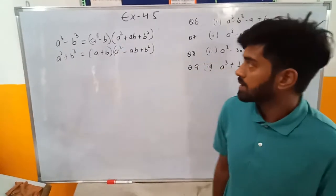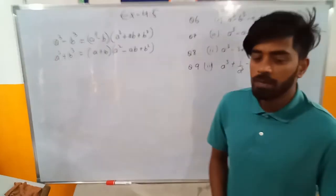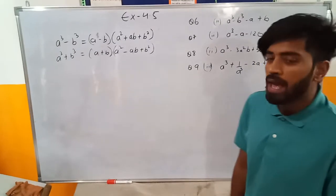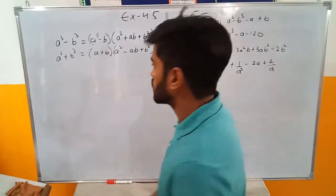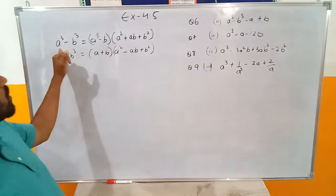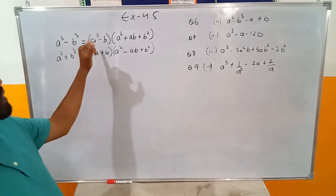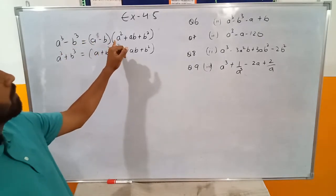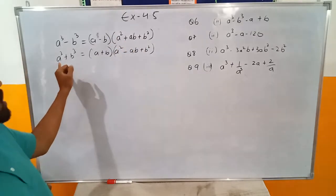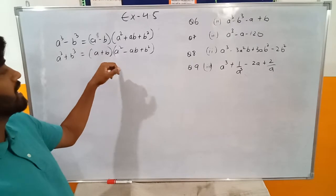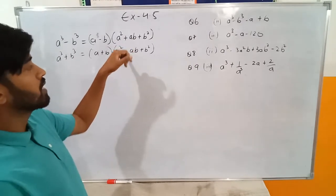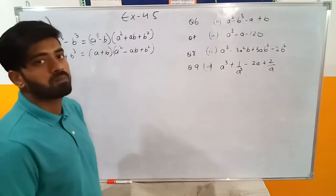Good morning everyone. Today we will be solving some questions from Exercise 4.5. This exercise is totally based on two formulas: a cube minus b cube equals a minus b, bracket a square plus ab plus b square, and a cube plus b cube equals bracket a plus b, bracket a square minus ab plus b square.